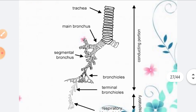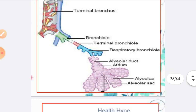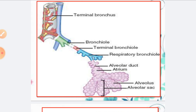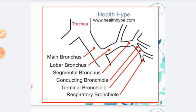This is the tracheobronchial tree. In the diagram: the trachea is at the top, dividing into the right and left main bronchi. These divide into lobar bronchi, then segmental bronchi, then conducting bronchioles, terminal bronchioles, respiratory bronchioles, alveolar ducts, and finally air sacs — which we call alveolar sacs or alveoli.